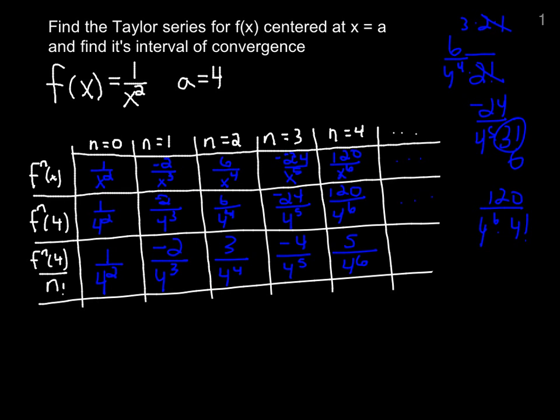So, we then have our coefficients. These are our coefficients on x to the n. Since we're centered at x equals 4, a equals 4, these are coefficients on x minus 4 to the n. So, the function is 1 over 4 squared is our constant term. Negative 2 over 4 cubed is our x minus 4 term. Positive 3 over 4 to the 4 is our x minus 4 squared term.